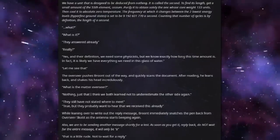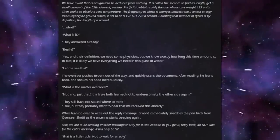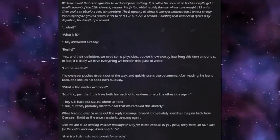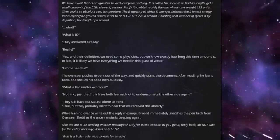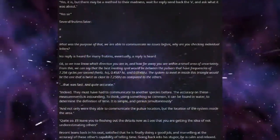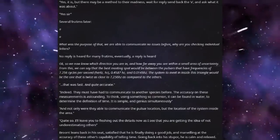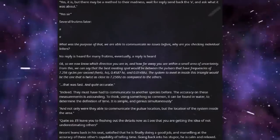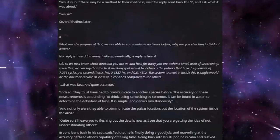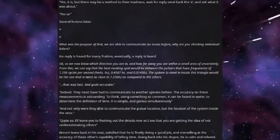While leaning over to write out the reply message, Brundt immediately snatches the pen back from Overseer Scottit as the antenna starts beeping again. Also, we are to be sending another message shortly for a test. As soon as you get it, reply back. Do not wait for the entire message. It will only be A. That is a little rude. Not to wait for a reply? Yes, it is, but there may be a method to their madness. Wait for reply, send back the A, and ask what it was about. Yes, sir. Several fruit hymns later. A. A. What was the purpose of that? We are able to communicate no issues before. Why are you checking individual letters? No reply is heard from many fruit hymns. Eventually, a reply is heard. Okay, so we now know which direction you are in, and how far away you are within a small area of uncertainty.